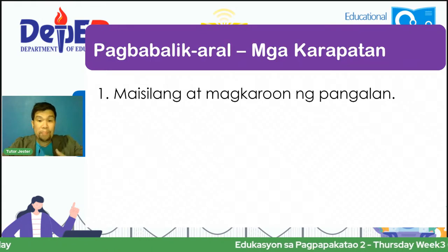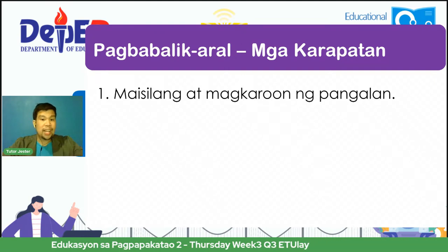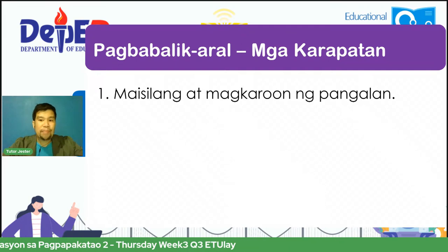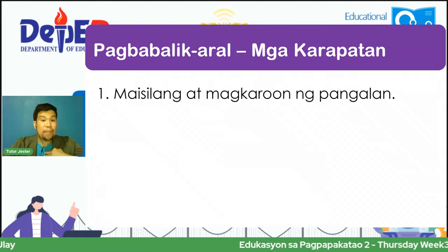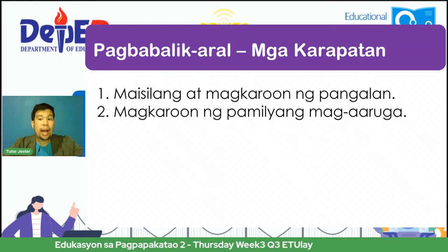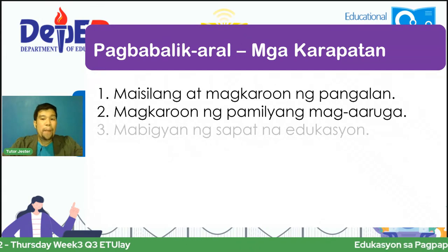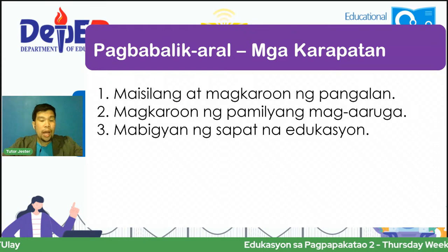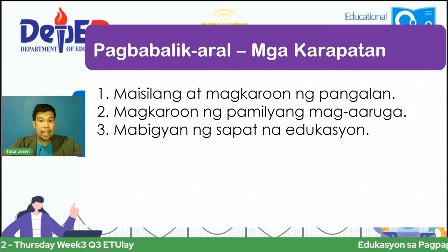Yun ang karapatan. Tinalakay ninyo kay Tutor Angel: una, maisilang at magkaroon ng inyong pangalan. Lahat naman tayo ay mayroong pangalan at iyan ay bigay sa atin ng ating mga magulang. Magkaroon ng pamilyang mag-aaruga o mag-aalaga sa atin. Magbigyan ng sapat na edukasyon — mahalaga ang edukasyon, kaya ang ating mga magulang ay pinapapasok tayo sa ating paaralan.